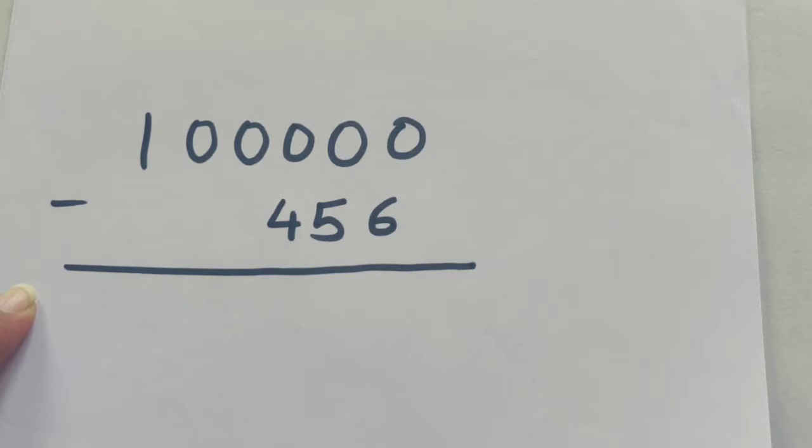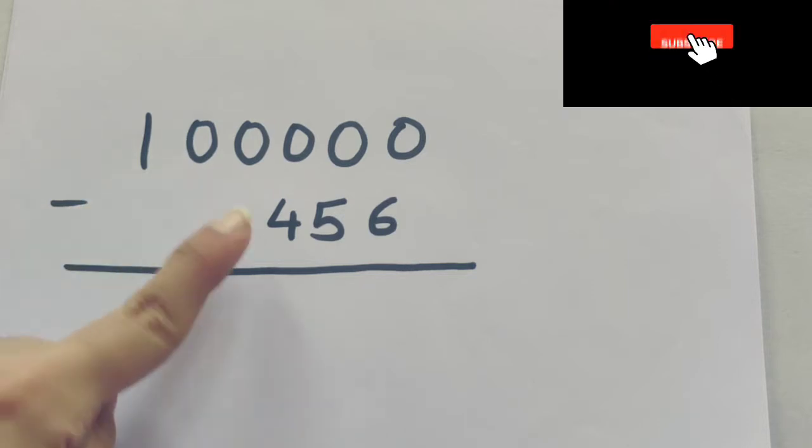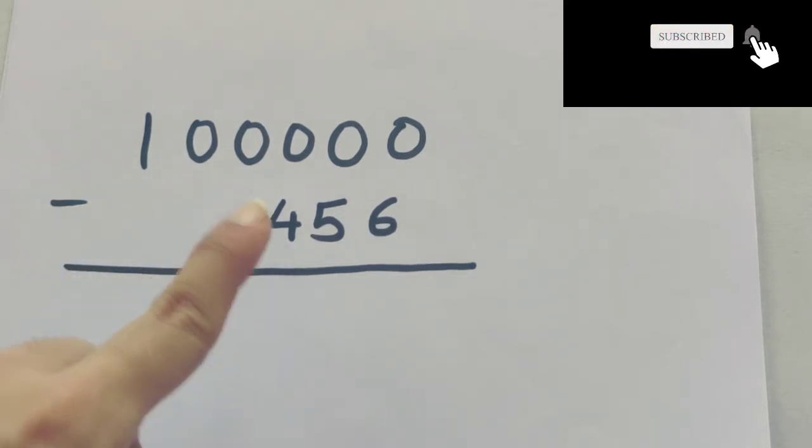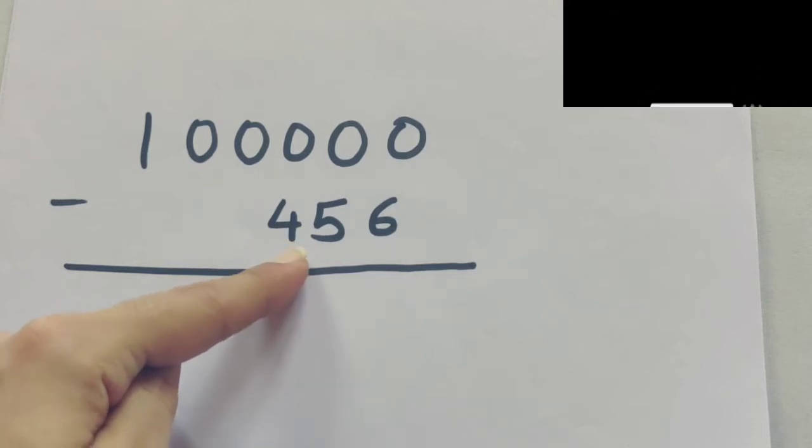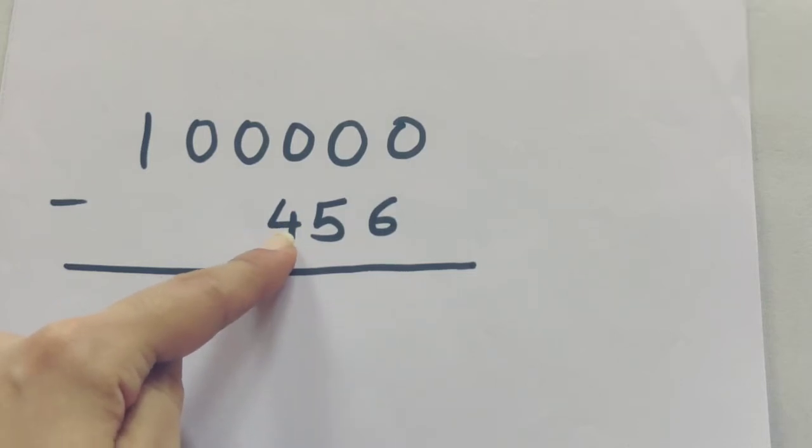The first simple step is to see the number of zeros in the higher number. Here I have five zeros in my bigger number. To equalize this number of zeros with the smaller number, I will add two more zeros to my smaller number. The first step is to equalize the number of zeros with the smaller number.